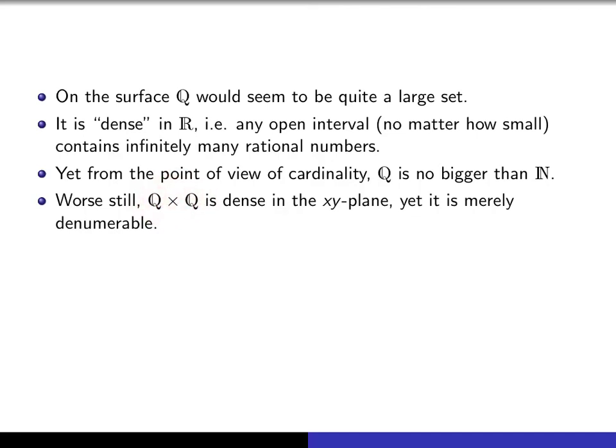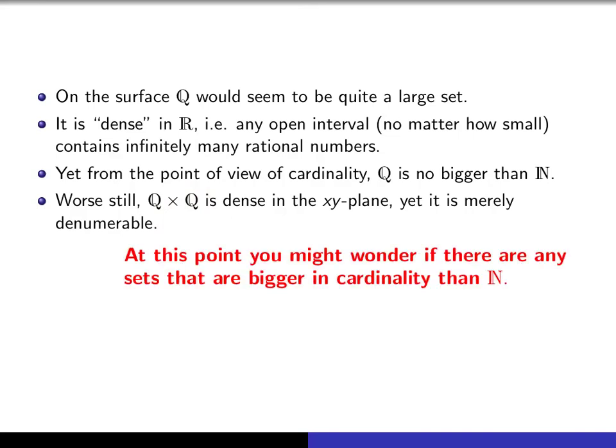So because of these examples that we've been looking at lately, we've been trying to build sets that are rather large, but each time we seem to just get something which is denumerable, you might be wondering if there are any sets that actually have a bigger cardinality than the natural numbers. So I think it's time that we started looking at such things. We want to look at examples of sets which are so-called uncountable sets, sets that are strictly bigger than the set of natural numbers in the sense of cardinality. And we'll start looking at that in the next lecture.